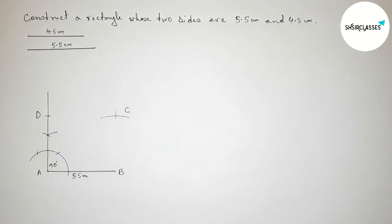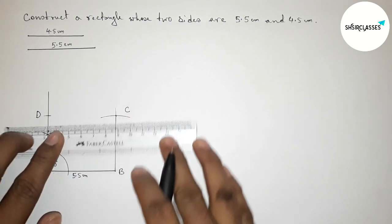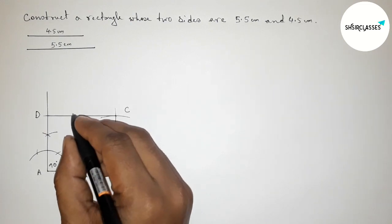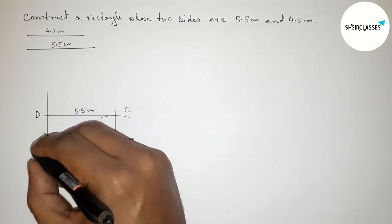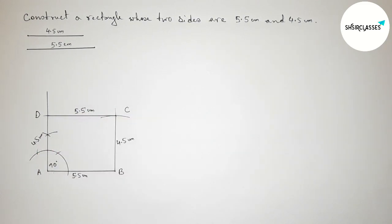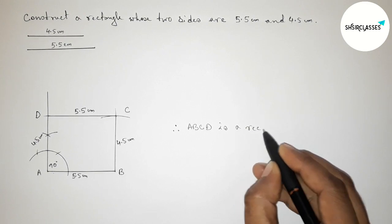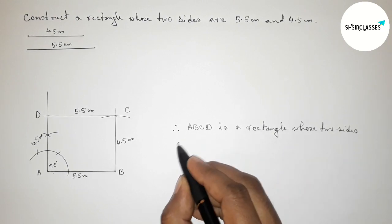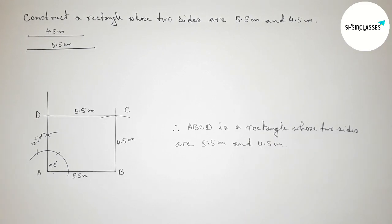Taking point C here and point D here. Joining B and C first, then joining side CD. This side and this side are equal — 5.5 centimeters, this side 4.5 centimeters, and this is also 4.5 centimeters. Therefore ABCD is a rectangle whose two sides are 4.5 centimeters and 5.5 centimeters. That's all, thanks for watching.